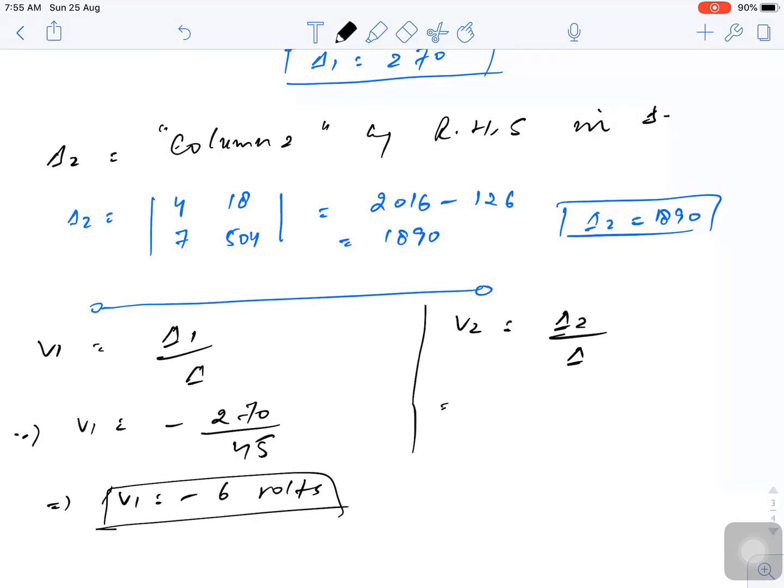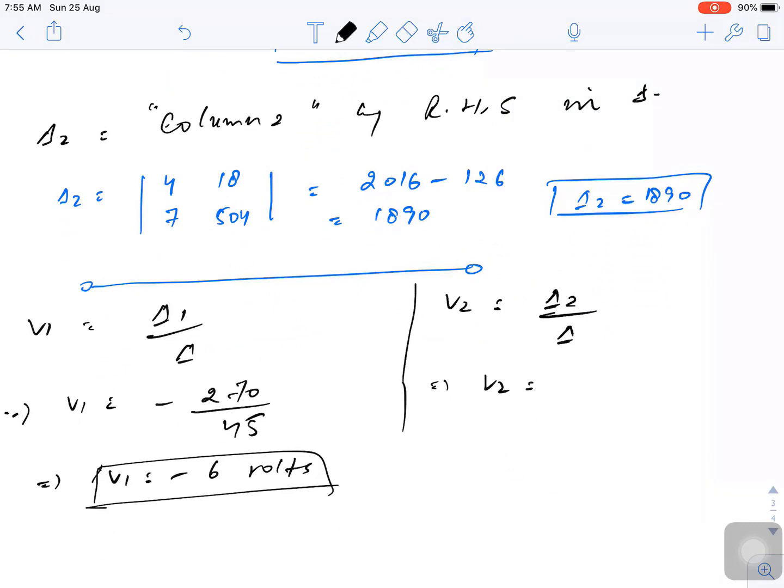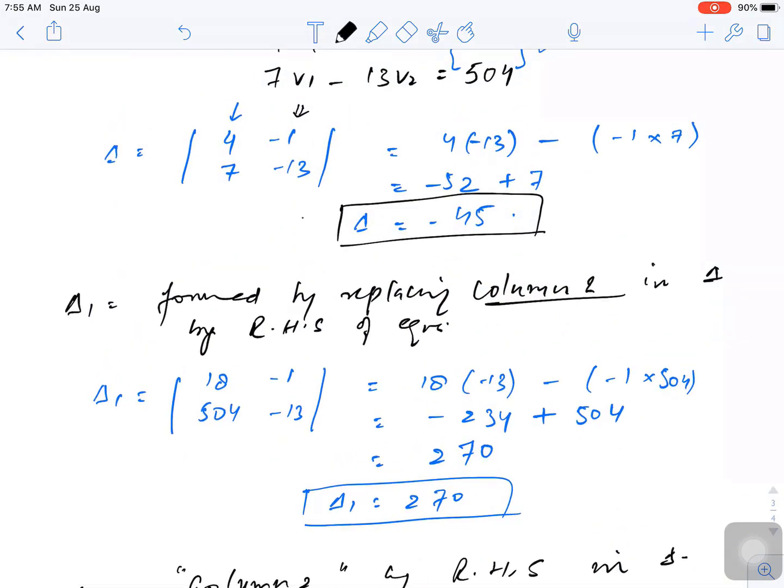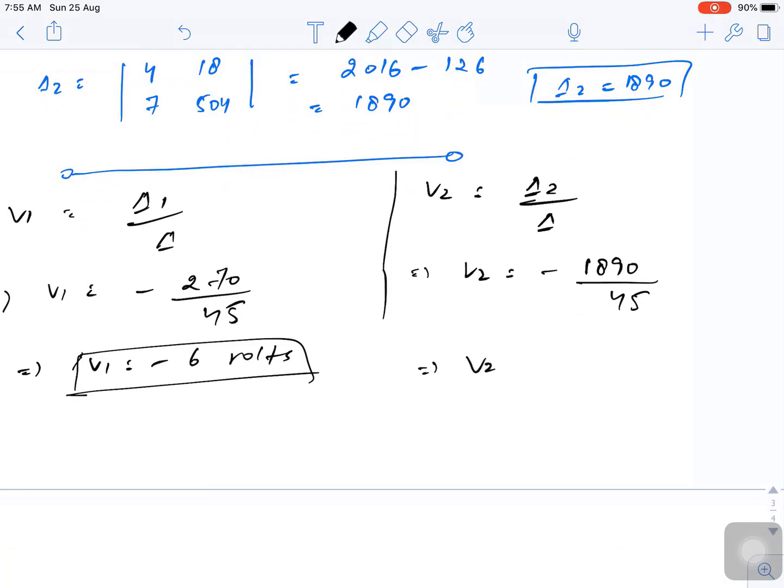And similarly, what is V2? V2 is delta 2, that is 1890, divided by delta. The minus is there because delta is minus 45. So solving this we get V2 is minus 42 volts.